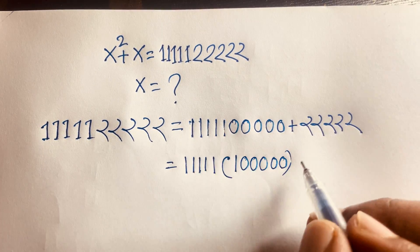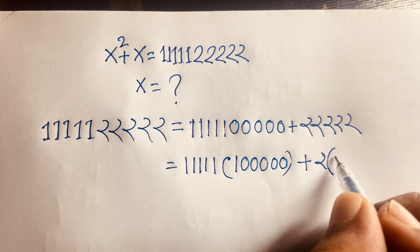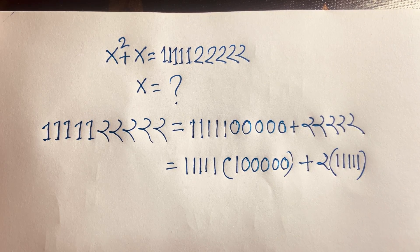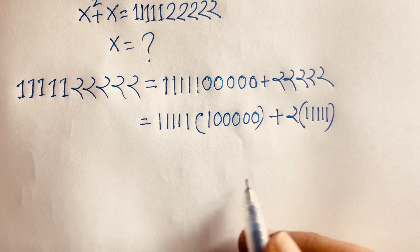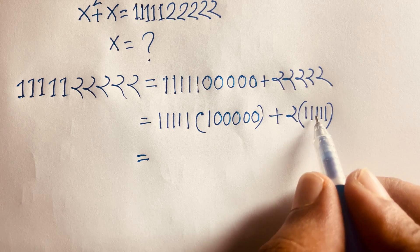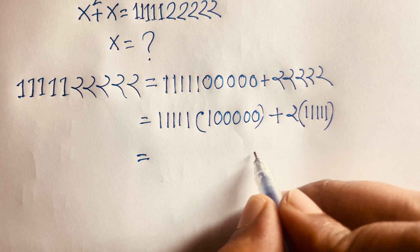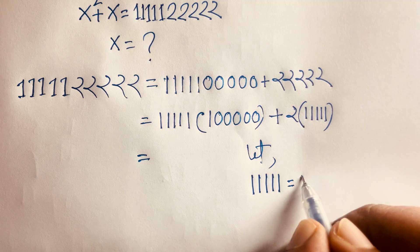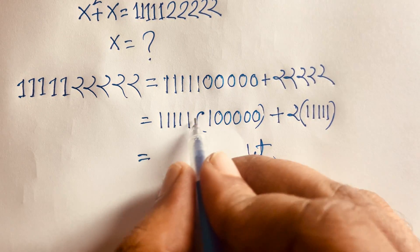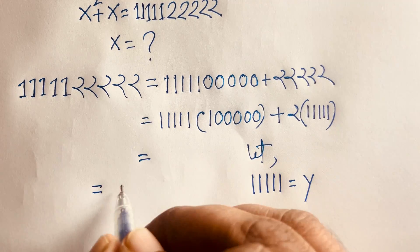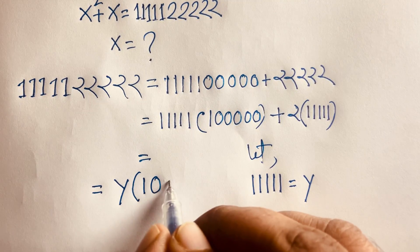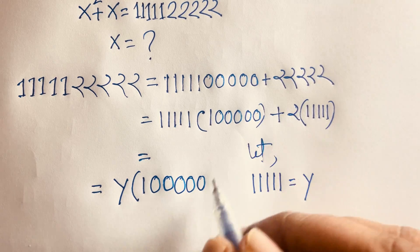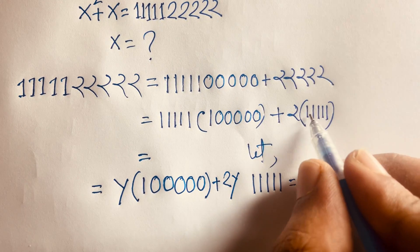So if I add both values we'll find out this value. I can see easily here is 11111 and here is 51 times, so it will be 100000. And here is plus 2 times 11111, so this time it will be 22222. I can see easily here is this value below is the same.